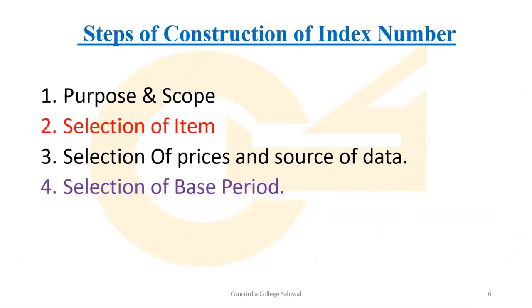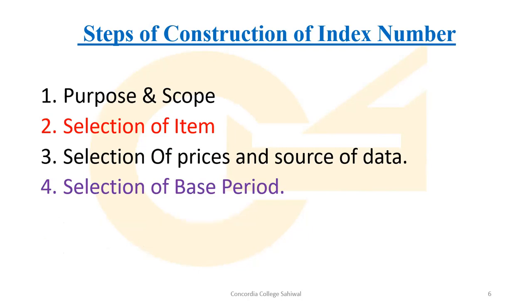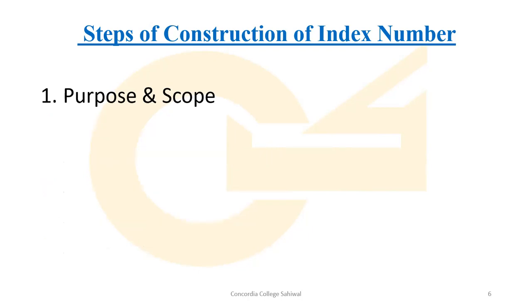Dear students, now we will discuss the steps of construction of index number. This question is worth two marks. The question will be: what are the steps of construction of index number? You will write the names of these steps. The first step is purpose and scope — this means deciding what purpose you have in making the index number. If your purpose is special, the scope is limited; if your purpose is general, the scope is wide.